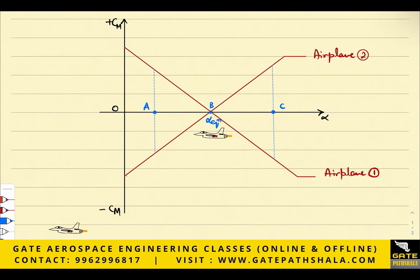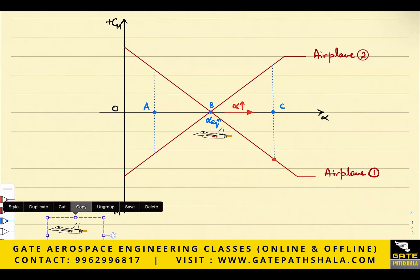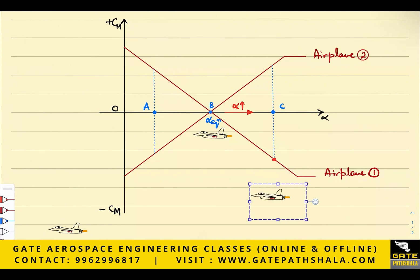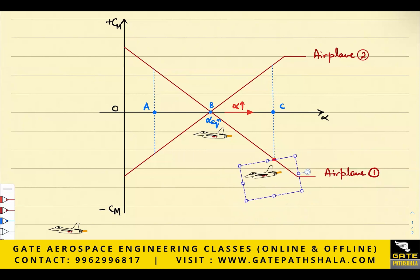We will first analyze airplane one. Suppose there is an increment in angle of attack due to a disturbance or pilot command. If the angle of attack is increased for airplane one, what will be the pitching moment? It will be a negative pitching moment — negative means nose down. So the airplane will make a nose-down pitching motion.